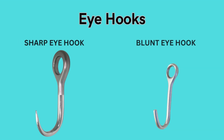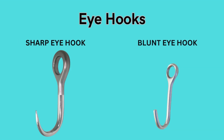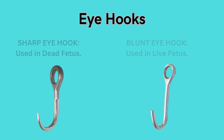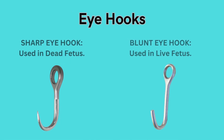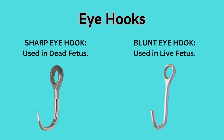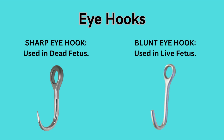Eye hook: these can be sharp or blunt. Sharp eye hook is used in dead fetuses while blunt eye hook is used in live fetuses. The eye hook is attached to a snare and is applied at the inner canthus of the eye of the fetus.